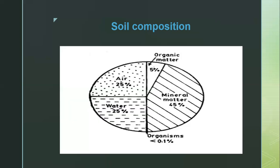Here is an illustration of soil composition shown in a pie chart. As mentioned, a typical soil is mainly composed of mineral matter, then water at 25 percent, air at 25 percent, organic matter at five percent, and less than 0.1 percent living organisms such as microorganisms.